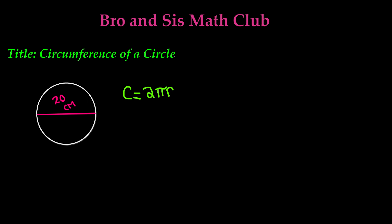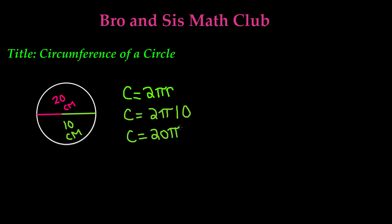So if the radius is half of the diameter, let's make a small line over the diameter. As you can see, half of this will be the radius, so the radius is equal to 10 centimeters. We can go ahead and plug that into our formula: C is equal to 2 times pi times 10 centimeters. We can simplify this by multiplying 2 times 10 to get 20π.